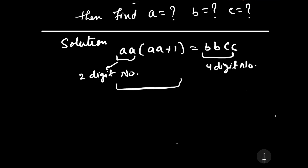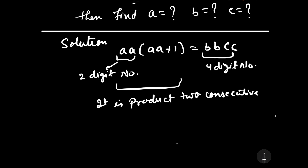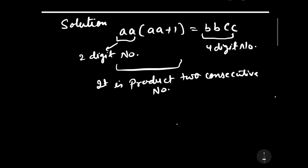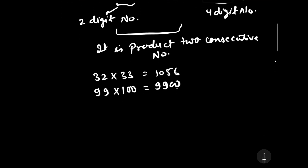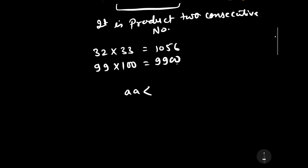This is the product of two consecutive numbers. The smallest two consecutive numbers whose product gives a four-digit number is 32 into 33, which gives 1056, whereas the largest two-digit number whose product gives a four-digit number is 99, giving 9900. It means the value of a will lie between 32 and 99.